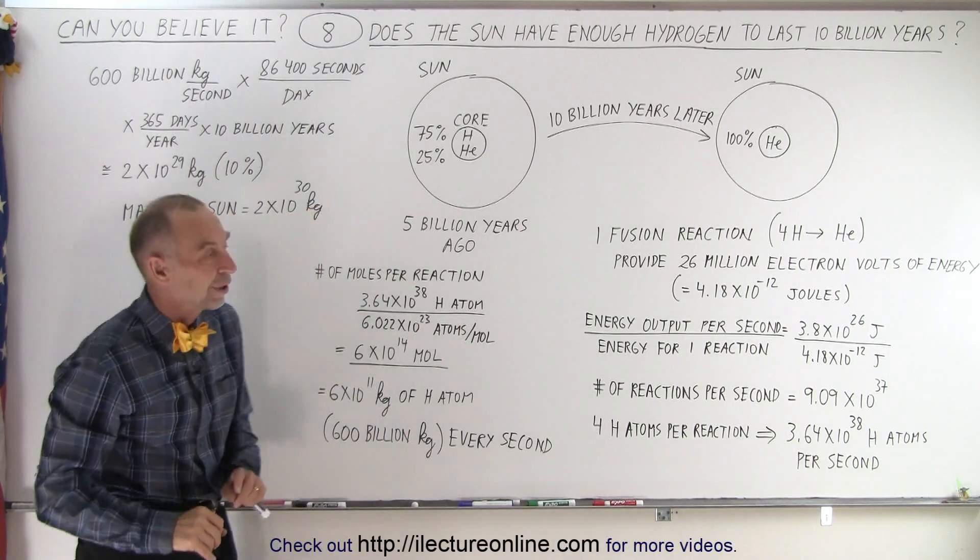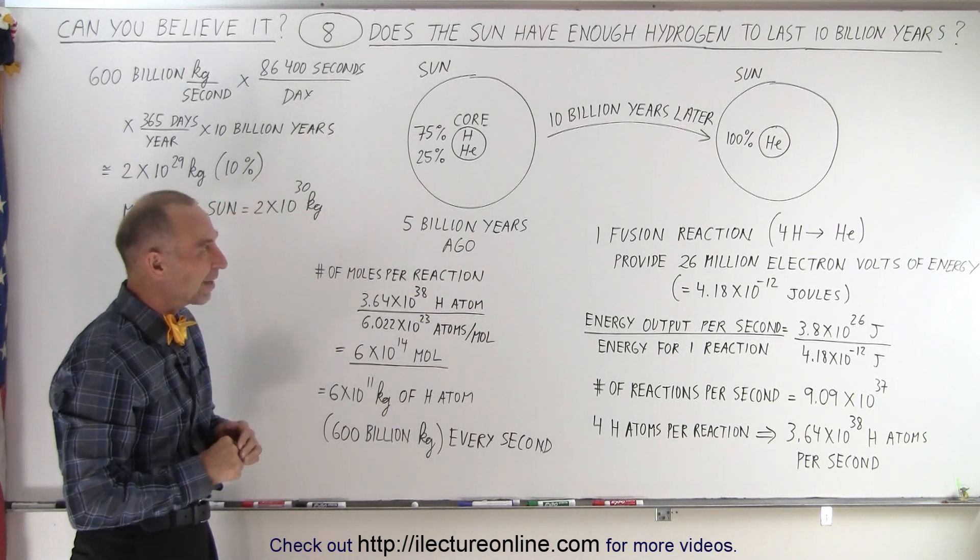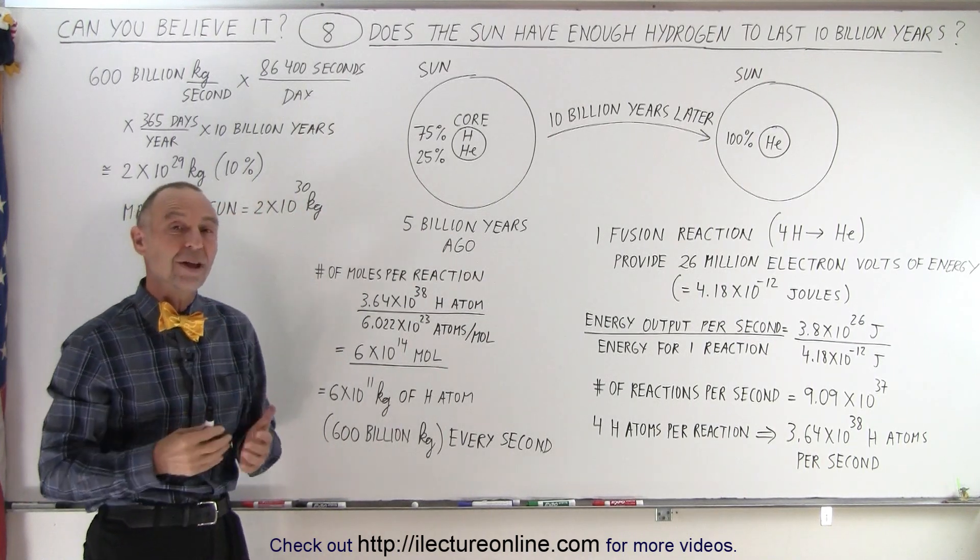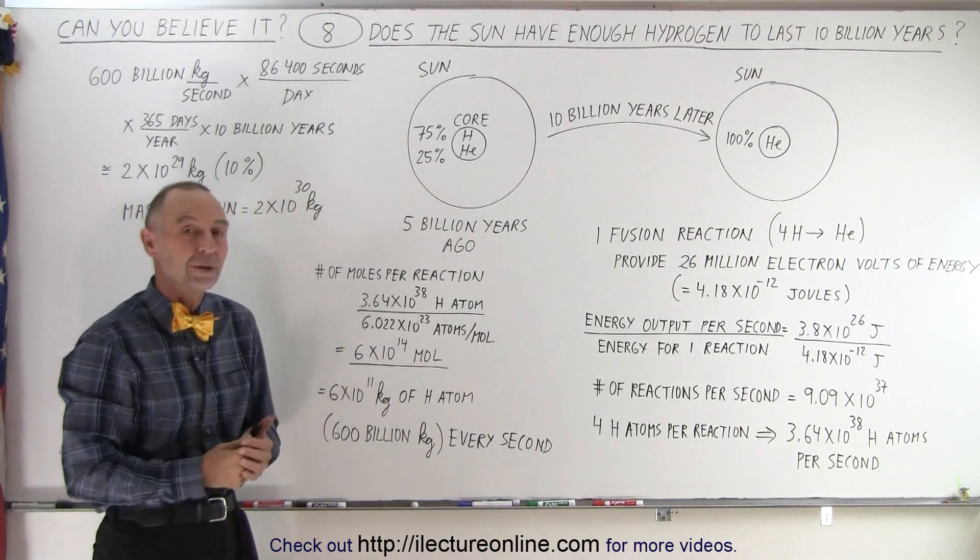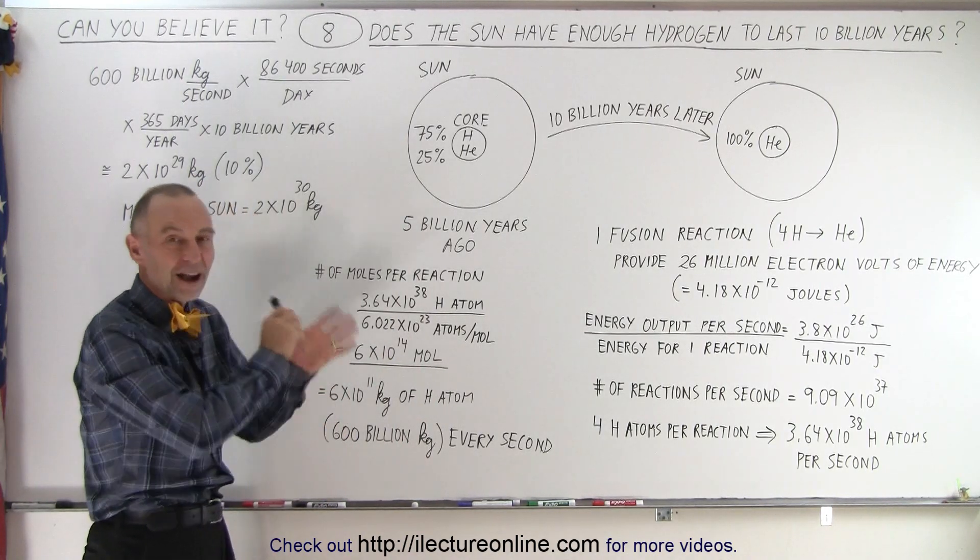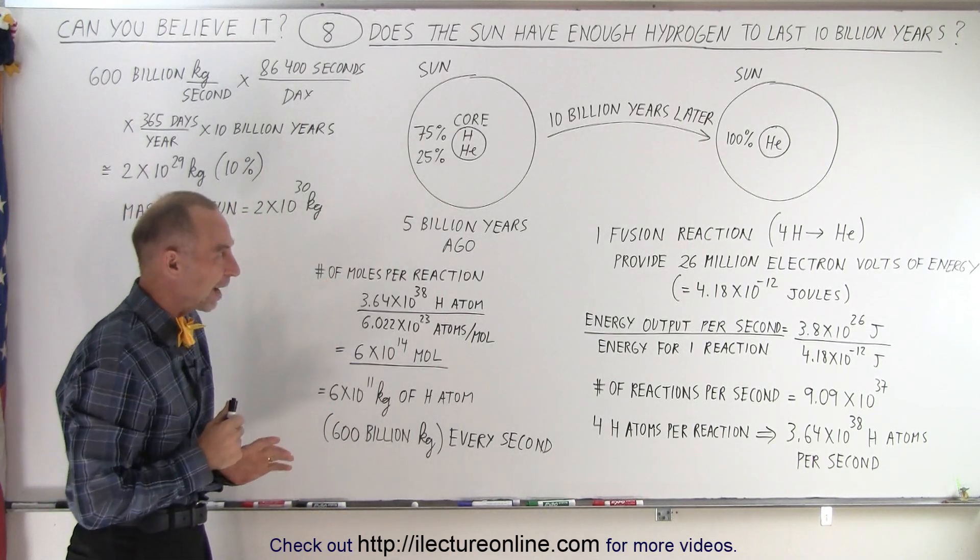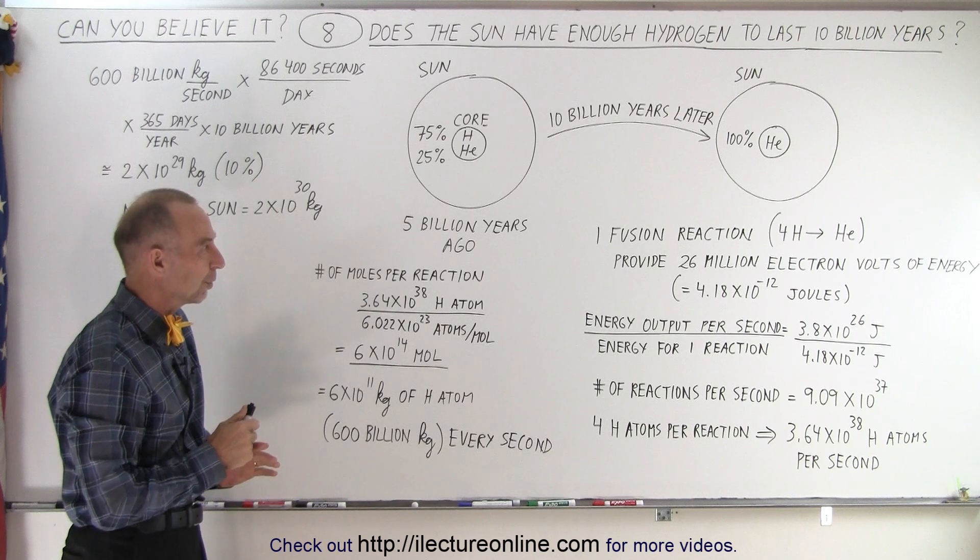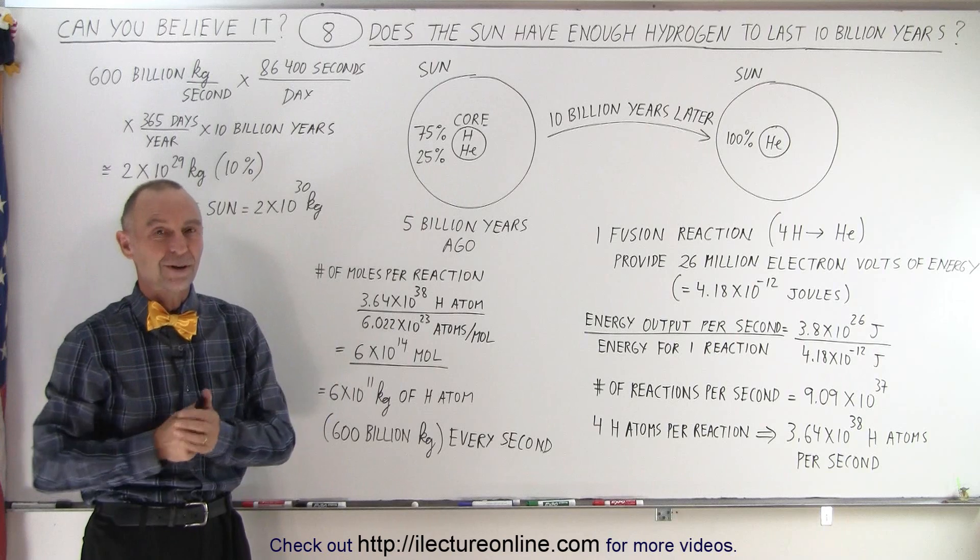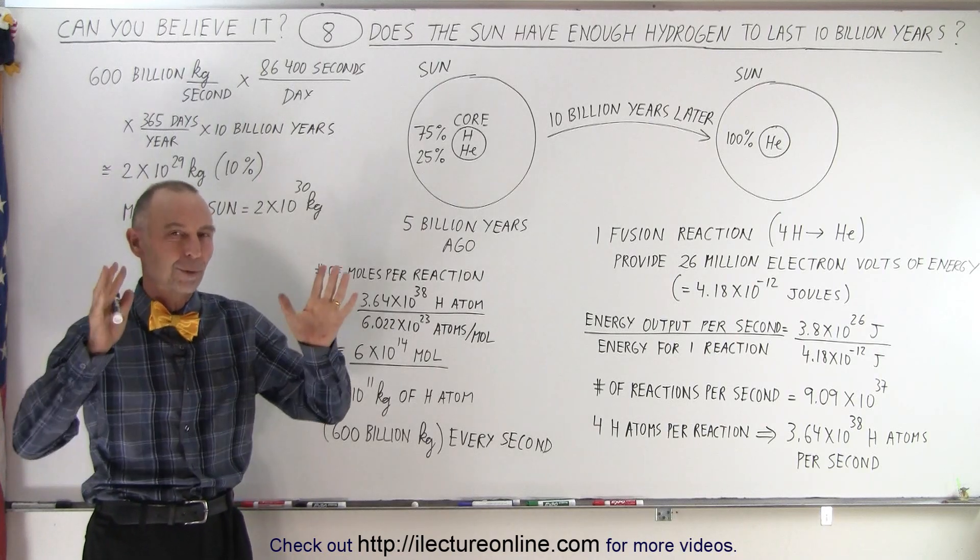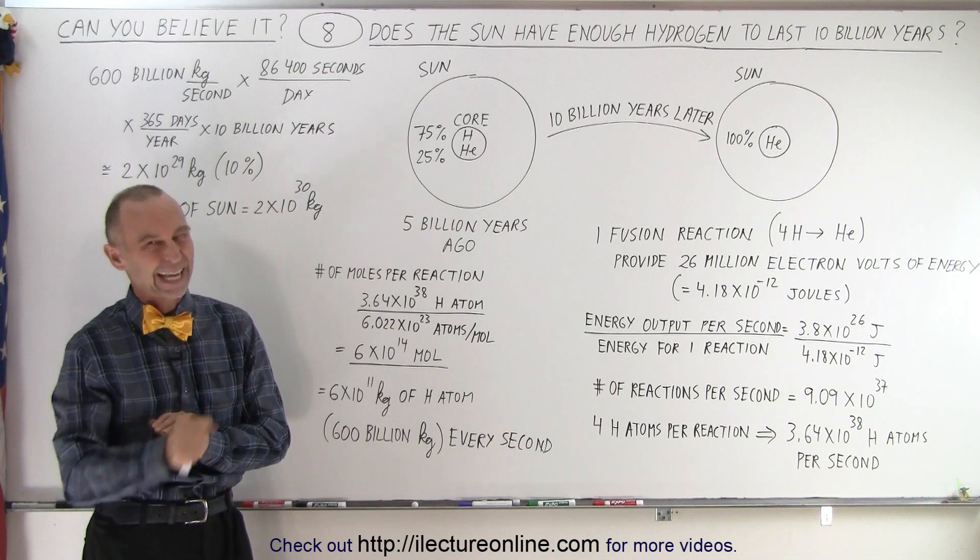Of course, we won't be around anymore to witness that, because that's far into the future. But we can say, with comfort, that the Sun has enough fuel, because that's the fuel of the Sun, hydrogen is the fuel, to turn it into helium for another 5 billion years. So we're good to go. The Sun has plenty of hydrogen, and it can convert that hydrogen to helium for another 5 billion years. So, you can sleep very easy and quiet tonight, not worrying about the Sun running out of fuel anytime soon. Can you believe it?